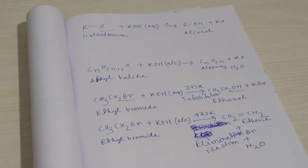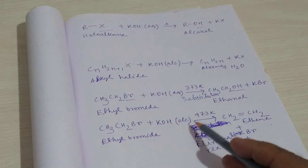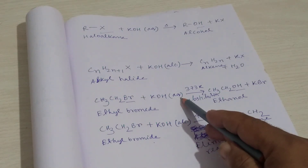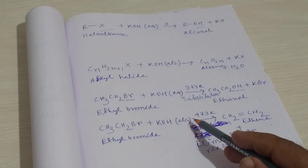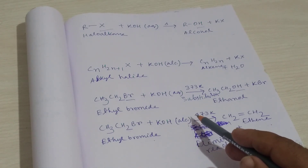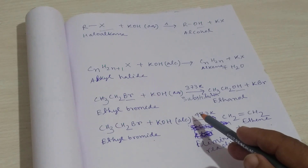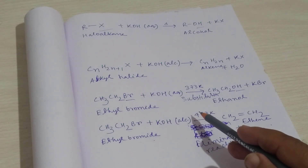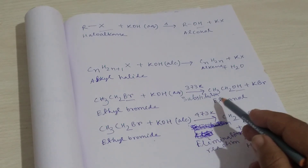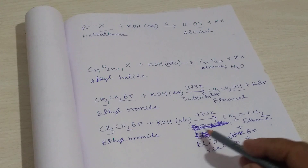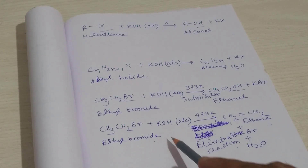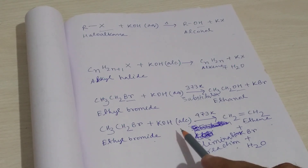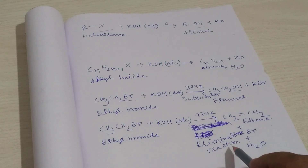The difference is due to the polarity of the solvent. In the aqueous case the solvent is water, and in the other case the solvent is alcohol. Water has higher polarity than alcohol. Higher polarity favors substitution, while lower polarity favors elimination. So when ethyl bromide reacts with alcoholic potassium hydroxide, an elimination reaction occurs because alcohol is less polar.